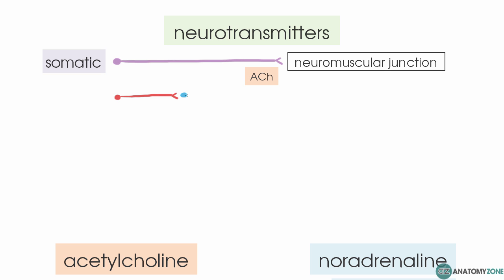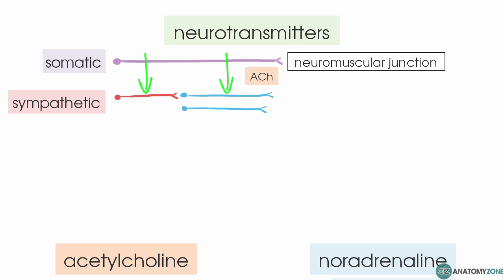In the sympathetic nervous system, we have the pre-ganglionic neuron and the post-ganglionic neuron. The neurotransmitter released at the pre-ganglionic synapse in both the sympathetic and parasympathetic nervous systems is acetylcholine. Almost all post-ganglionic sympathetic neurons — except those which innervate sweat glands — are noradrenergic, meaning they secrete noradrenaline to their target organ. The ones that do innervate sweat glands are acetylcholine-secreting.